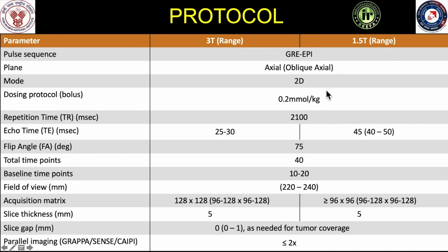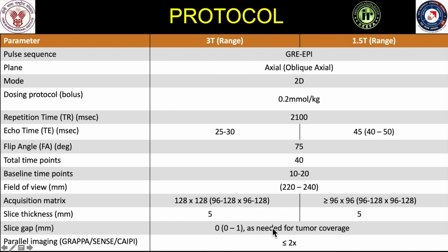Acquisition is made in 2D mode with administration of a double dose of contrast — about 0.2 mmol/kg — at a rate of 4 to 5 ml/second via a power injector. The TR is usually 1.5 seconds or less, flip angle approximately 75 degrees, with about 40 time points. Slice thickness is 5 mm without inter-slice gap; an acceleration factor of no more than 2 can be used with parallel imaging.